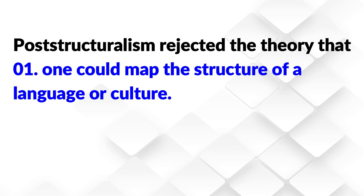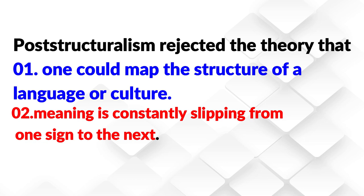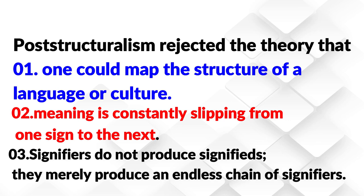Thus, the above discussion shows us that poststructuralism rejected the theory that one could map the structure of a language or culture. It says that meaning is constantly slipping from one sign to the next. It also points out that signifiers do not produce signifieds. They merely produce an endless chain of signifiers.